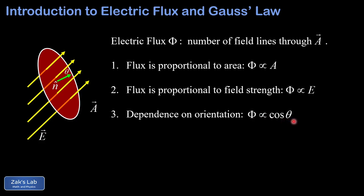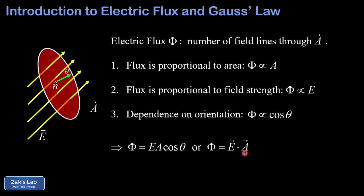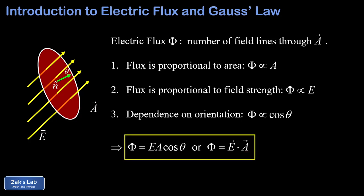Putting all three of these properties together, we arrive at a good definition of electric flux: Phi equals E times A times the cosine of theta. But this could also be written as a dot product — the electric field vector dotted into the area vector, remembering that the area vector is just the area multiplied by N hat, and that dot product takes care of the cosine function. This formula is valid provided the electric field is constant and the surface is flat with only one unique orientation, so the normal vector is always pointing the same direction.